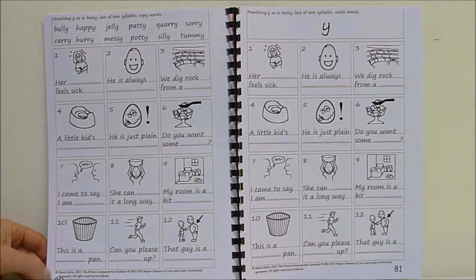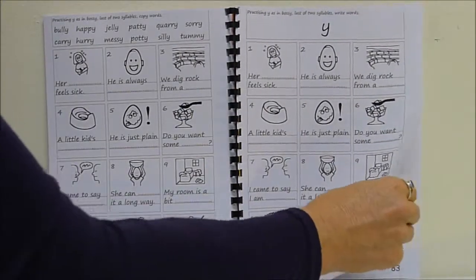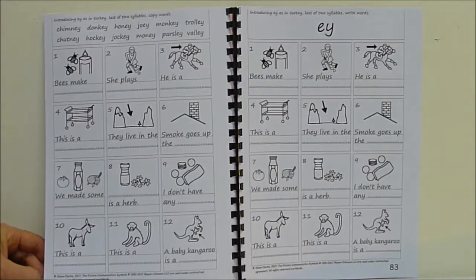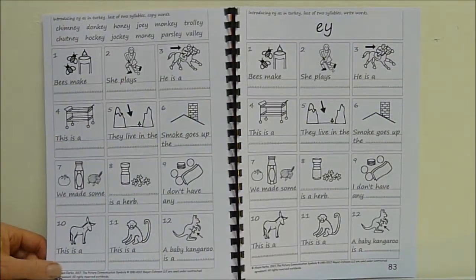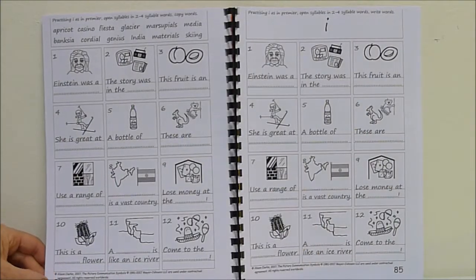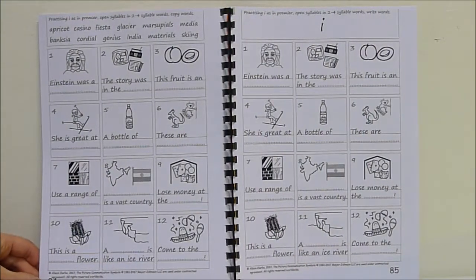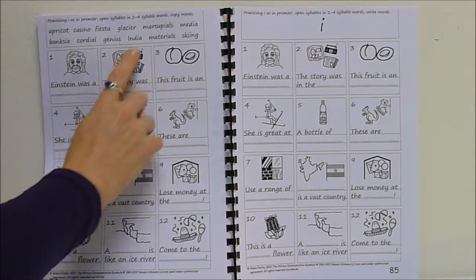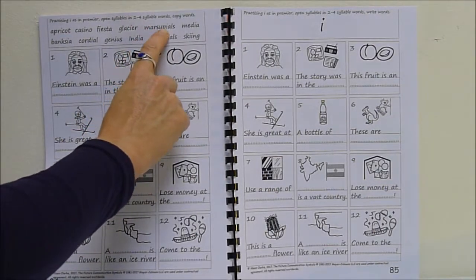E as in bully, jelly, messy. So we met that in workbook three, but another little practice of it. Chimney with E-Y. Jockey, money, parsley, valley. E as in apricot. These are all things we met in workbook three, but again, another round of them and a slightly longer word, marsupials, media.